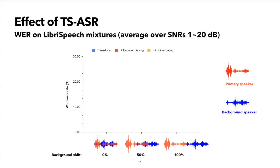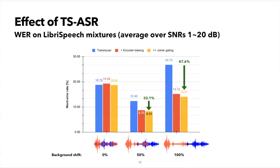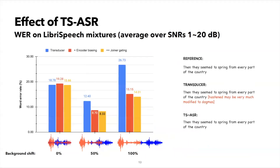On the y-axis, we have word error rates for the target utterance. First, we can see that there is no improvement in the 0% case. This is expected because the wake word segment in this case is also contaminated. However, when we do have a clean wake word, our methods show significant reduction in word error rate, namely 33.1% and 47.6% for the 50% and 100% shift conditions, respectively. If we consider an example from the 100% shift condition, we see that the base transducer model transcribed both the target speaker and the background speaker, which is undesirable. Our model, on the other hand, suppressed the background speech effectively using the anchor segment.